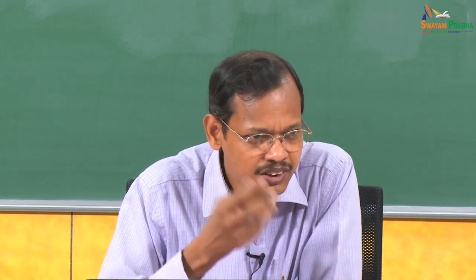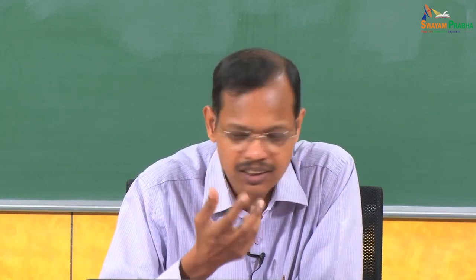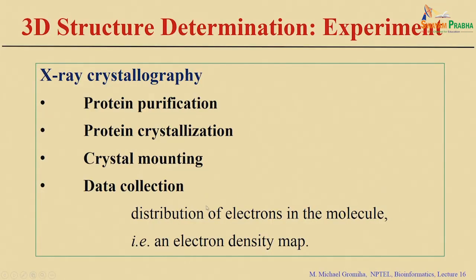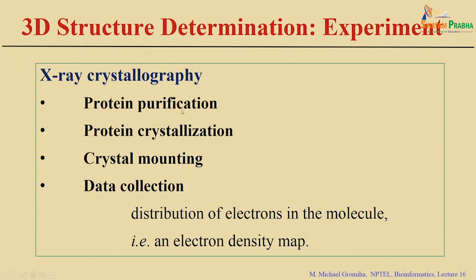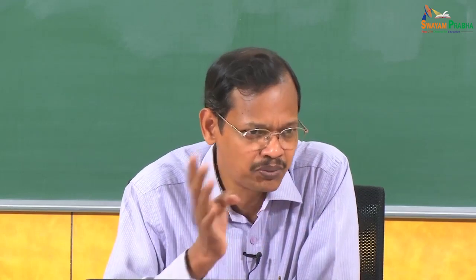First, we need to have a pure protein — you can either synthesize the protein or extract and isolate it. We have to ensure the protein is pure. The first step is purification; once we get the pure protein, we need to crystallize it, because the X-ray diffraction is important and in order to get diffraction we need a crystal.